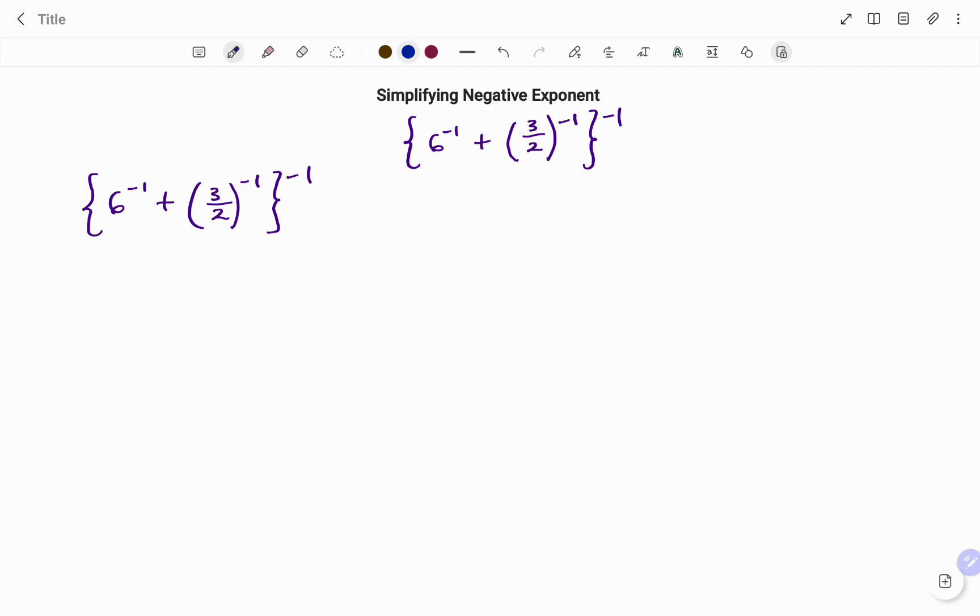The law of exponents states that if I have a base raised to a negative exponent, to make it positive, the negative becomes the fraction bar and we have a to the power of positive x.